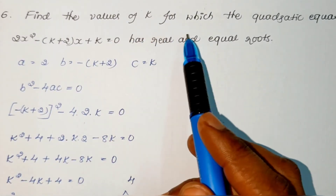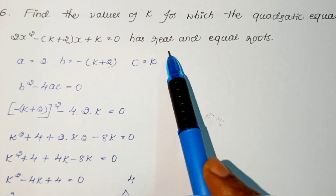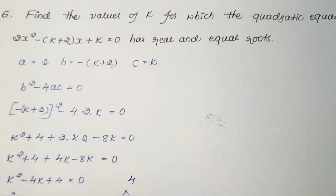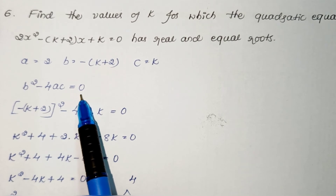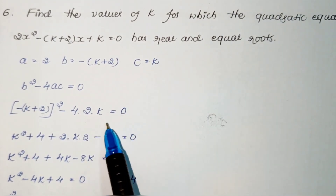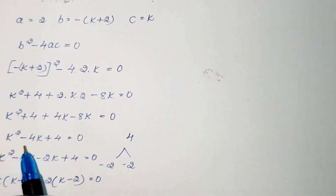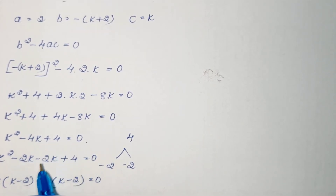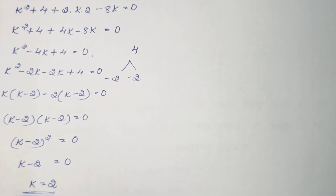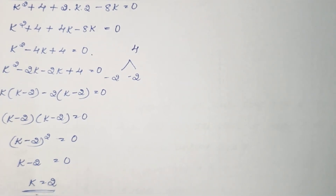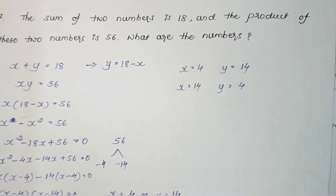Next, find the values of k for which 2x² − (k + 2)x + k = 0 has real and equal roots. For real and equal roots, we set the discriminant equal to zero. Substituting the values of a, b, c and equating b² − 4ac = 0 gives k² − 4k + 4 = 0. Solving by the splitting method gives k = 2. Therefore, for k = 2, this equation will have real and equal roots.